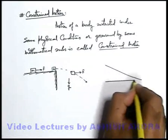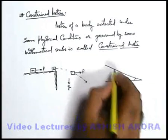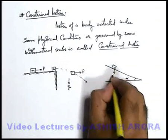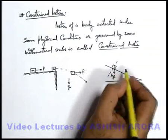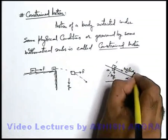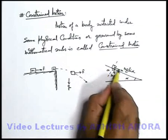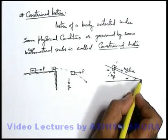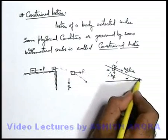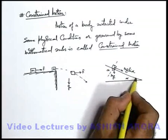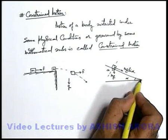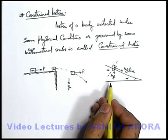Similarly, say if there is an inclined plane having an angle of inclination alpha, and a body is placed on it. We know well that the body will experience mg in the downward direction. If this is the normal to the plane, along the incline, if this angle is alpha, the component will be mg sin alpha. Due to mg sin alpha, the body will start sliding along the inclined plane. So here we can say, because of this inclined plane, the body is constrained to move along the angle of inclination alpha only — or it is constrained to move along the inclined surface only. Such type of motion we call constrained motion.